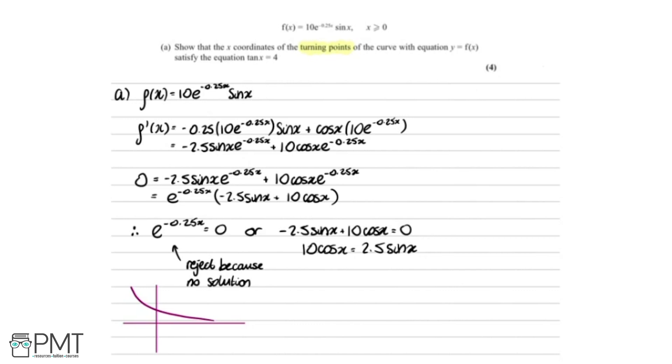And then what I'm going to do is I'm going to divide both sides by 2.5, and divide both sides by cos x, which means we'll get that 10 over 2.5 equals sin x over cos x. And then since sin x over cos x equals tan x, we can write this.